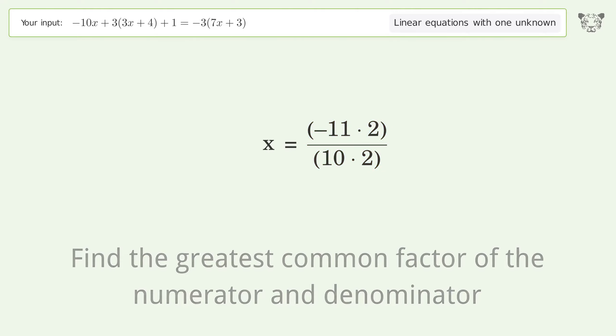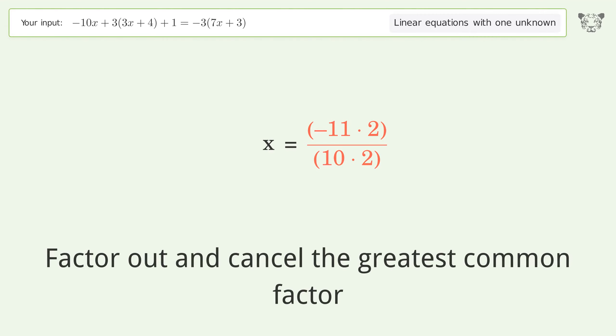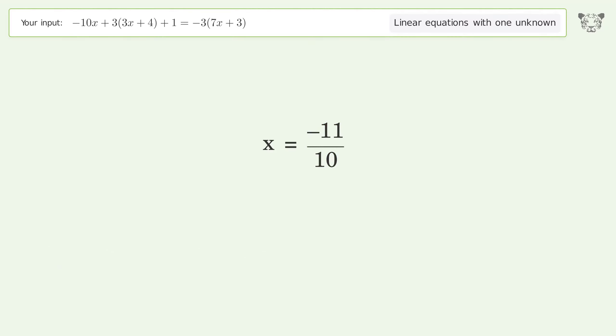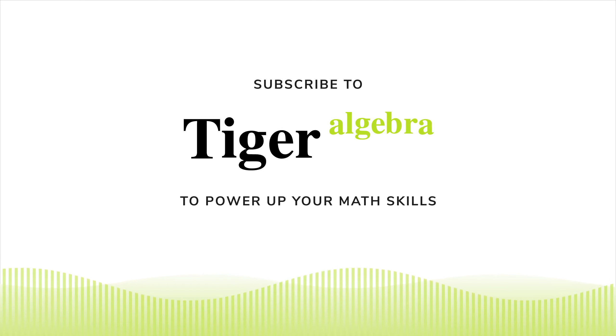Find the greatest common factor of the numerator and denominator. Factor out and cancel the greatest common factor. And so the final result is x equals negative 11 over 10.